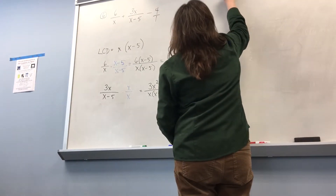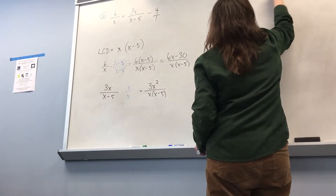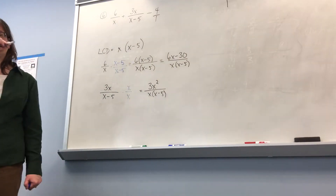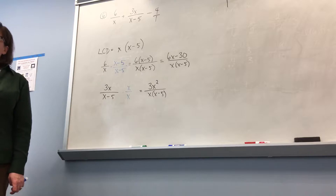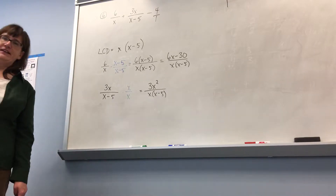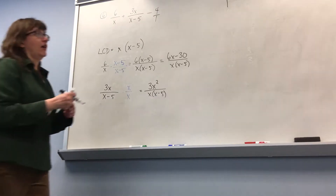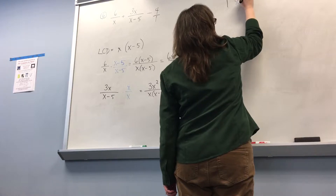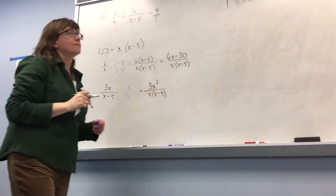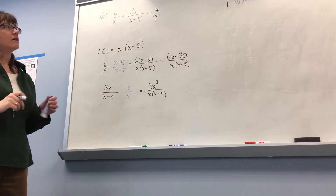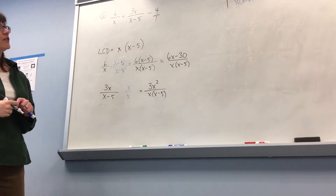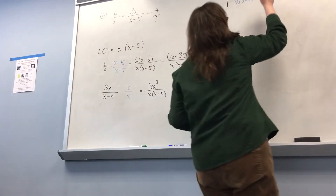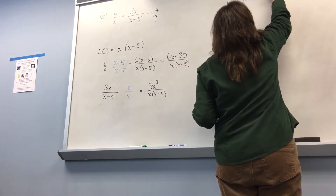My third fraction is 4 over 1. Leave a little space, write the denominator that I want. What do I have to multiply by what I have to get what I want? x times x minus 5 — all of it. So on the top I have 4 times x times x minus 5. Distributing that gives us 4x squared minus 20x.